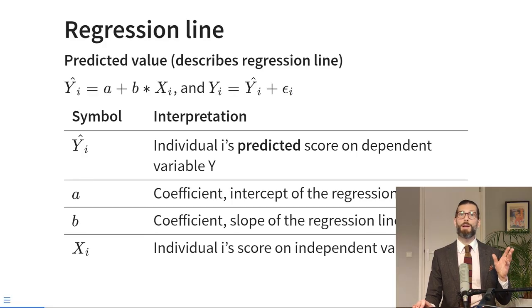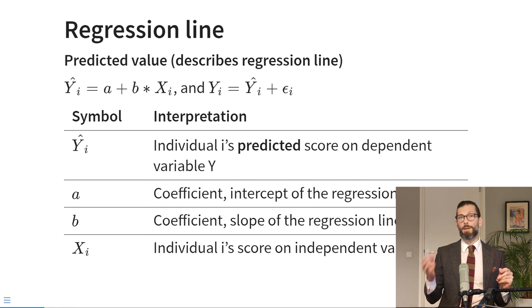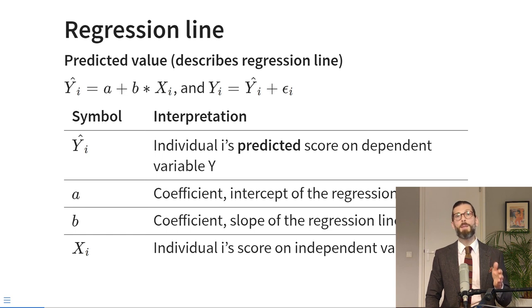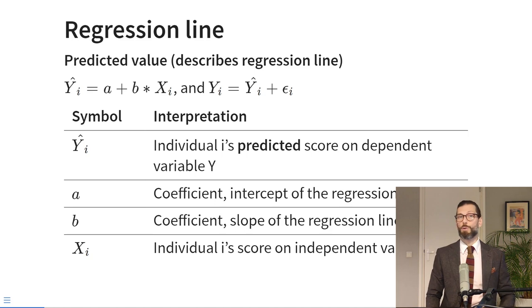We can also represent the regression equation by separating it into the predicted values y-hat for every individual i, plus the individual prediction errors epsilon sub i. And then we can say that the observed values y sub i are equal to the predicted values y-hat sub i plus individual prediction errors.